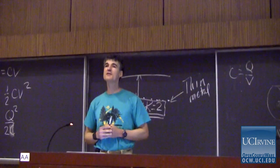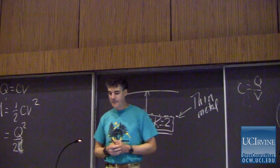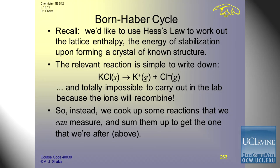Our solution was to try to come up with some reactions using Hess's law — reactions that we can measure quite easily — that total up to the one we want to get. We play a game of figuring out what we can measure for this reaction that we can't easily carry out in the lab. We're going to do it by stages: take the atoms, move an electron off one and onto the other, keep track of all the energy in all these processes, and total it up.